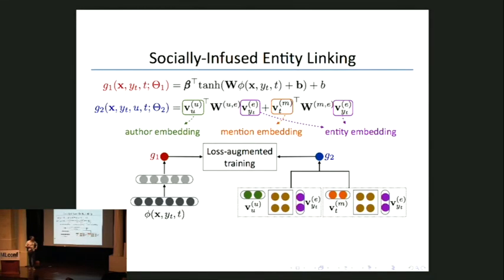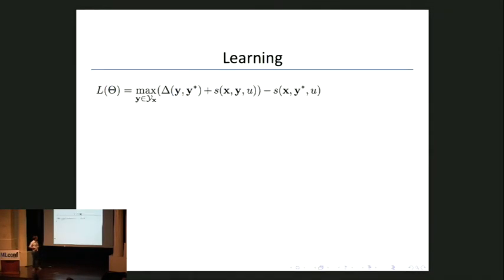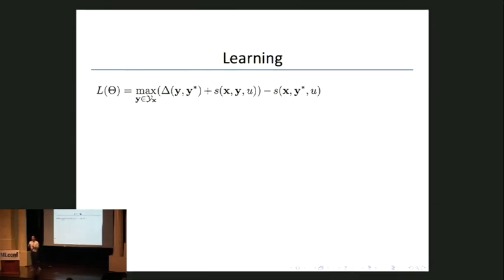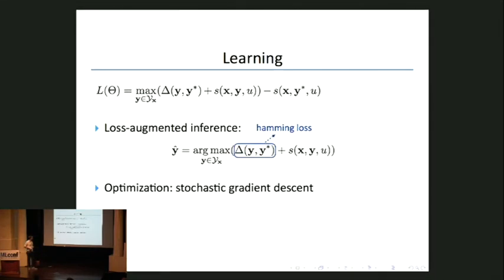The training we apply is an SVM-style loss-augmented training algorithm. We look for hypotheses — possible entity labels — that get a high score according to our current model but are wrong, with a high error term. We penalize those in particular, getting a gradient to move our model away from them. We don't want to just move away from wrong answers — we want to move away from wrong answers that our model likes. That's the idea underlying support vector machines. Once we have that objective, we get gradients and do stochastic gradient descent to learn all parameters.